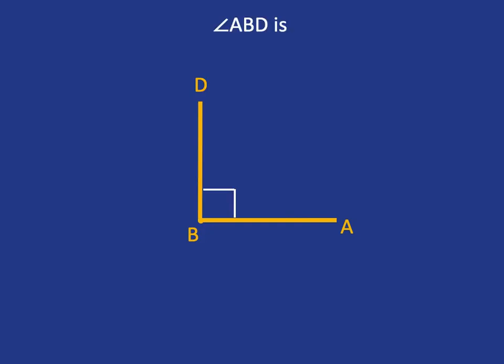Here, angle ABD, which is shown by that square-marked white angle sign, shows that this angle is exactly 90 degrees, and we call that a right angle.